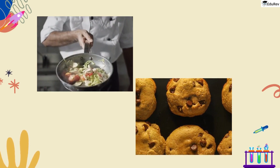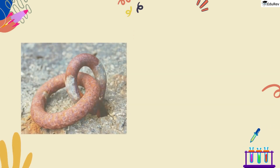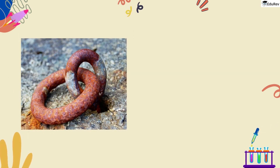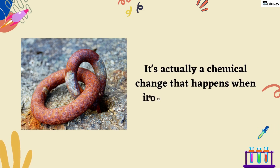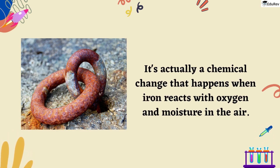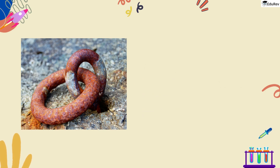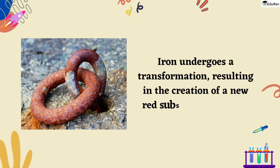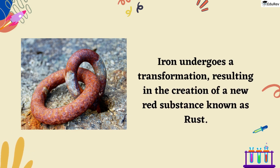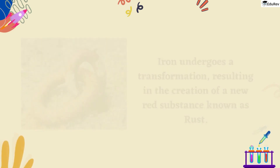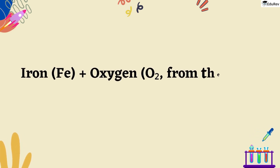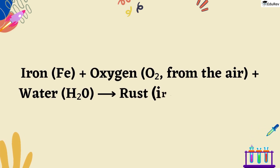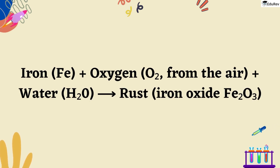This is why we can smell and taste different scents and flavors because of the chemical reactions that occur when we cook and bake. For example, have you ever seen a piece of iron rust? It may seem like a simple process, but it's actually a chemical change that happens when iron reacts with oxygen and moisture in the air. Iron undergoes a transformation, resulting in the creation of a new red substance known as rust. This can be represented as: iron (Fe) + oxygen (O2) from the air + water (H2O) gives rust, iron oxide (Fe2O3).